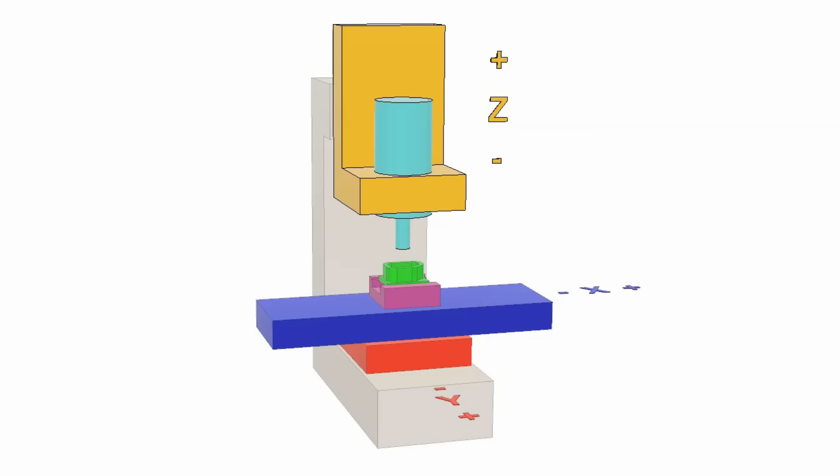These three axes of motion let the spindle, which spins a cutter at very high speeds, carve away material and leave behind nearly any shape desired.